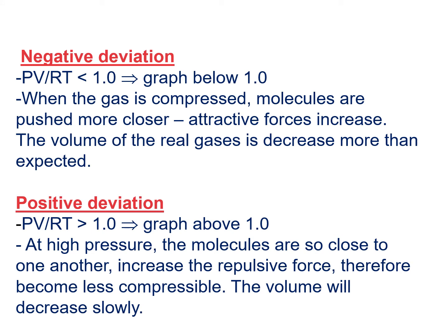For negative deviation, PV over RT is less than 1, so the graph is plotted below 1. When the gas is compressed, molecules are pushed closer together, therefore attractive forces increase, making the volume of the real gases decrease more than expected. For positive deviation, when PV over RT is more than 1, the graph is plotted above 1. At high pressure, the molecules are so close to one another, increasing the repulsive force, therefore it becomes less compressible.